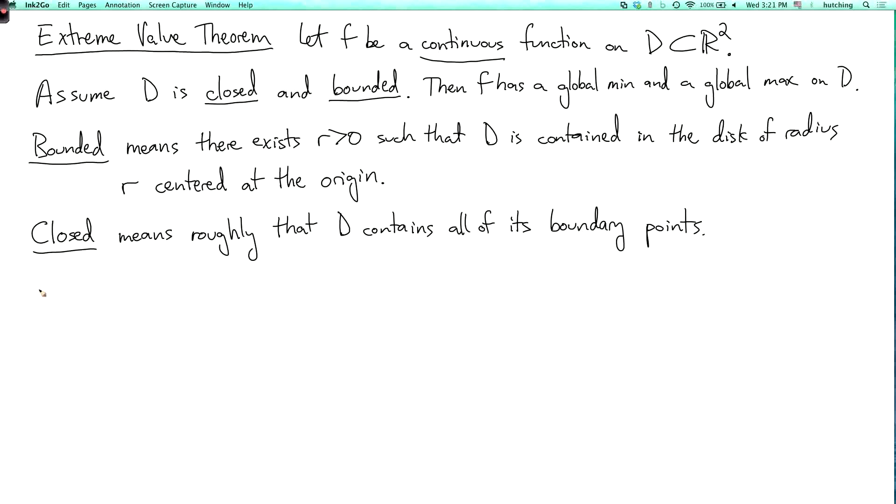So for example, suppose D is the set of points x, y such that x squared plus y squared is less than or equal to 1. So this is the closed unit disk, that's what it's called, and this is closed.